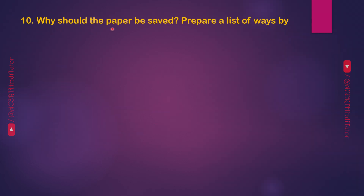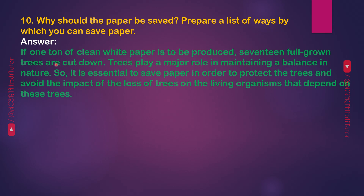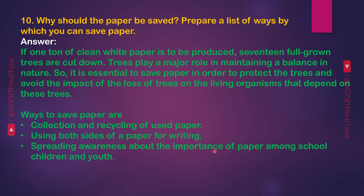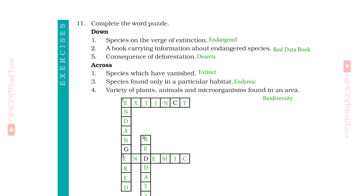Question 10: Why should paper be saved? If one ton of clean white paper is to be produced, 17 full-grown trees are cut down. Trees play a major role in maintaining a balance in nature. So it is essential to save paper in order to protect the trees and avoid the impact of the loss of trees on living organisms. Ways to save paper: collection and recycling of used paper; using both sides of a paper for writing; spreading awareness about the importance of paper among school children and youth; intelligent and proper use of paper.